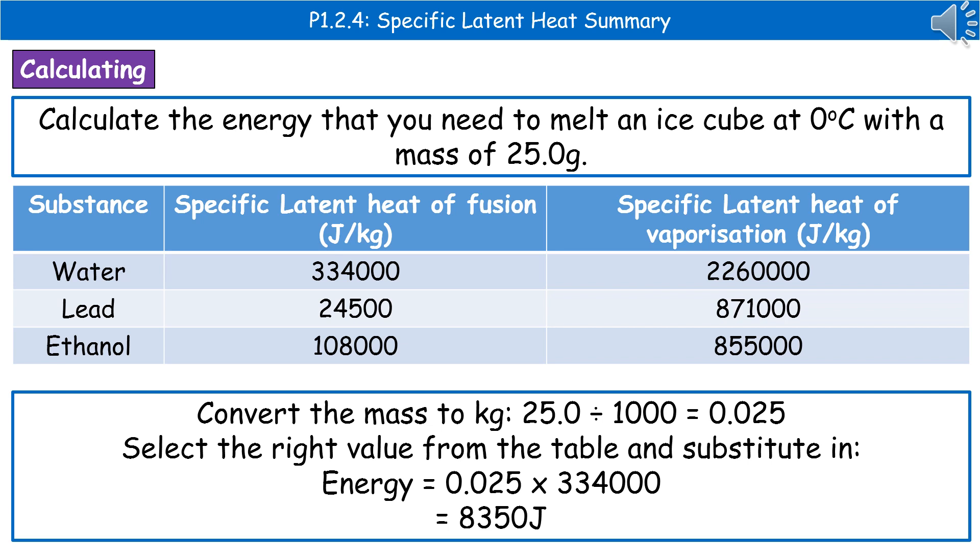So if we have a little look first of all when we read our question we can see they're trying to trip you up because the mass is in grams. So step one convert the mass to kilograms. So 25 divided by 1000 gives us 0.025.